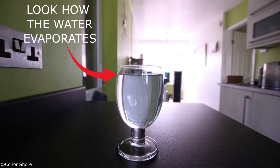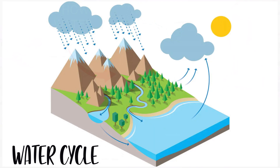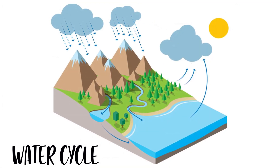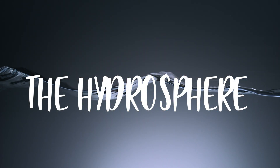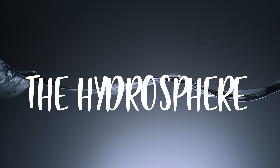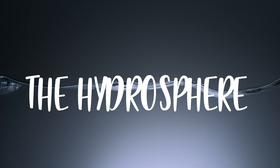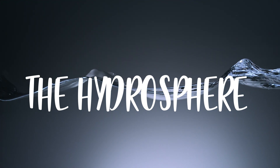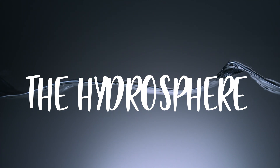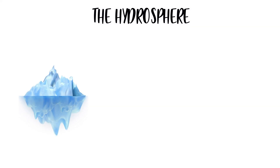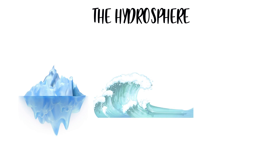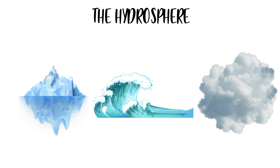So now that we understand the water cycle, let's learn about what we call the hydrosphere. The hydrosphere is the layer of water that surrounds the entire Earth. Water can be found in three states: solid, such as the ice that covers the poles; liquid, such as seas, rivers, and oceans; and gaseous, such as the clouds in the sky.